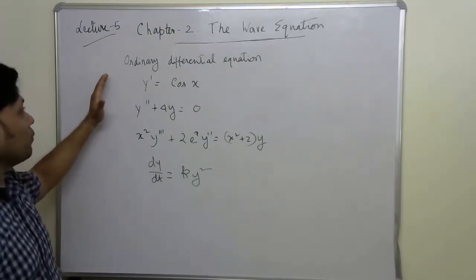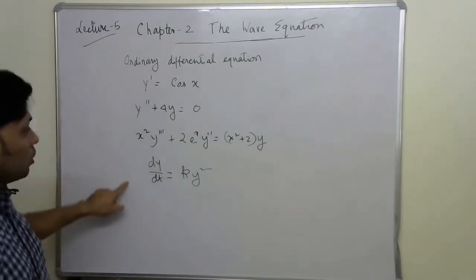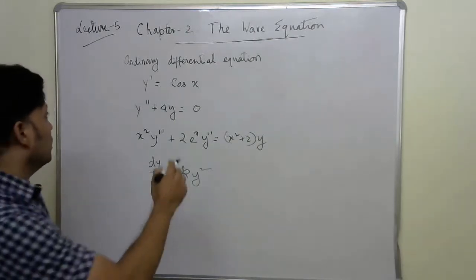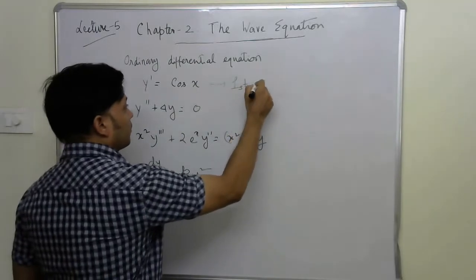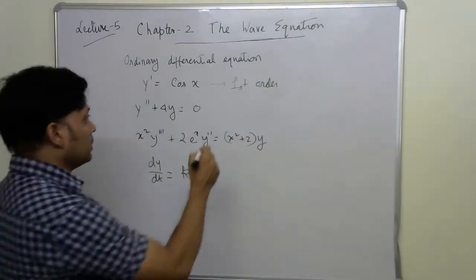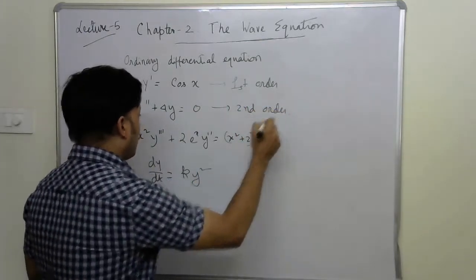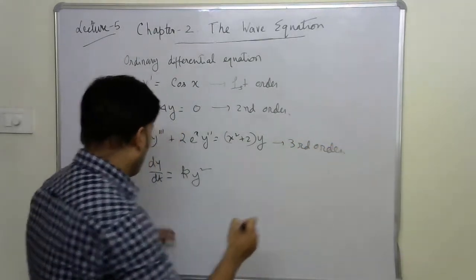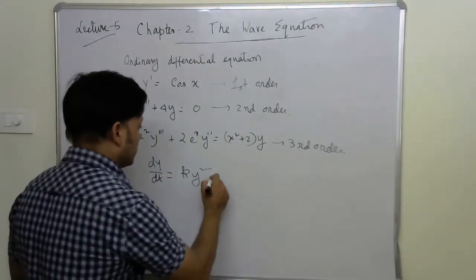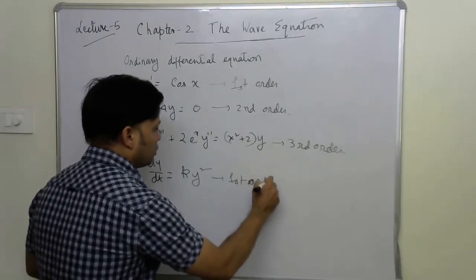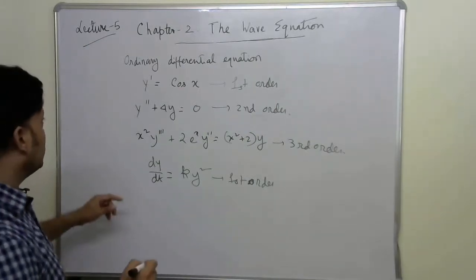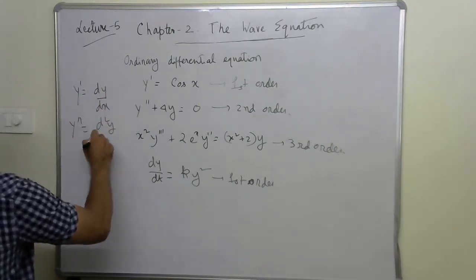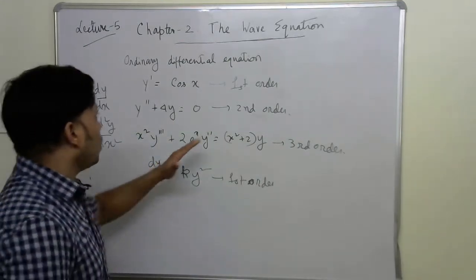Here are some examples of ordinary differential equations. Let's find the orders: one equation is first order, another is second order, another is third order, and dy/dt = ky² is also first order. The order is defined by the highest order derivative present — y' means dy/dx, y'' means d²y/dx², and so on.